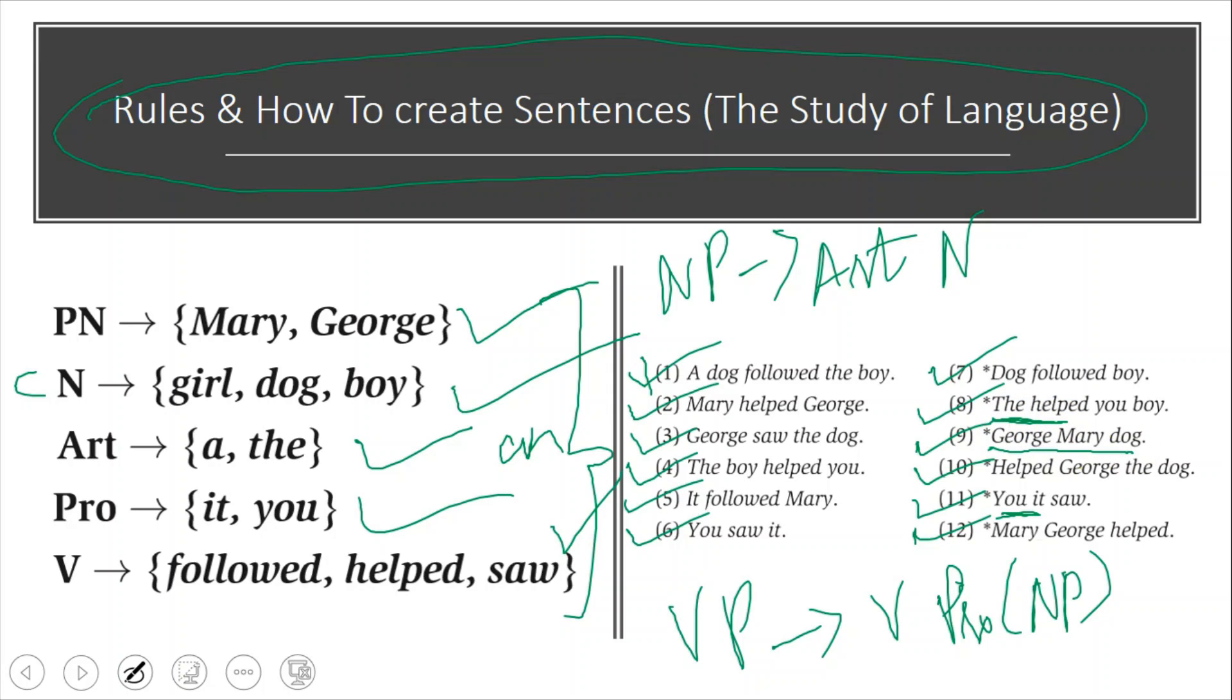In 'dog followed boy,' what's wrong is there's no article here or there. It should have been 'a dog followed the boy' or 'a dog followed a boy.' 'Helped George the dog'—the verb never comes at the beginning. 'Mary George helped'—this cannot happen with two nouns and then a verb.